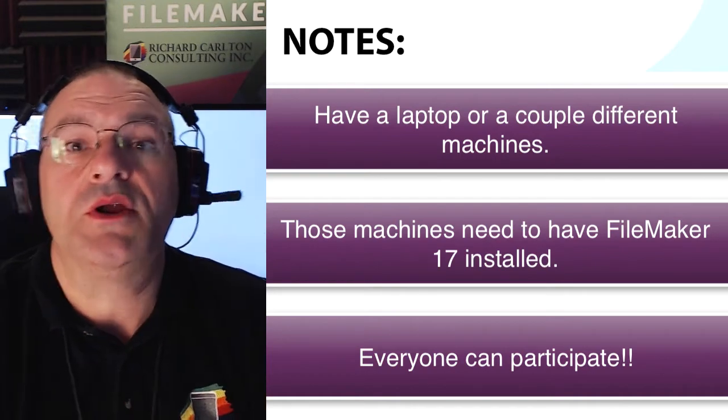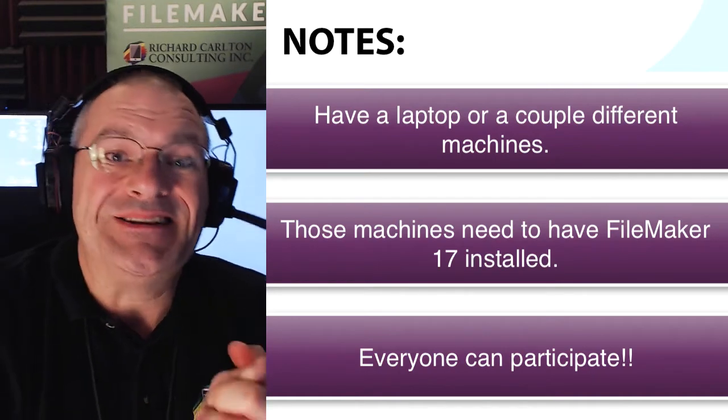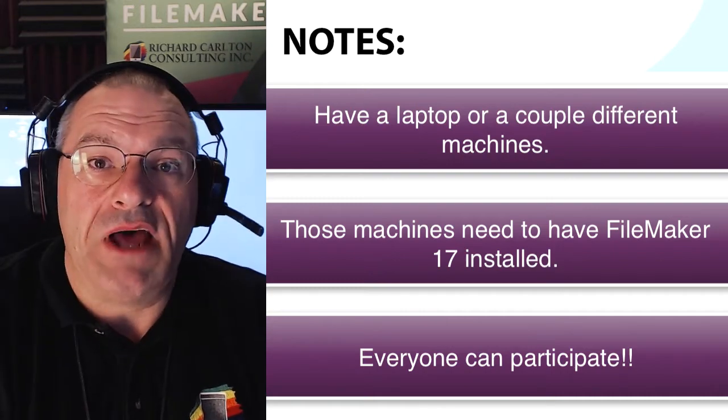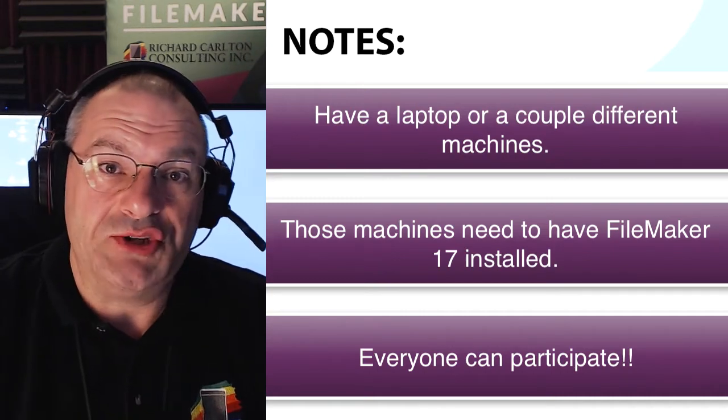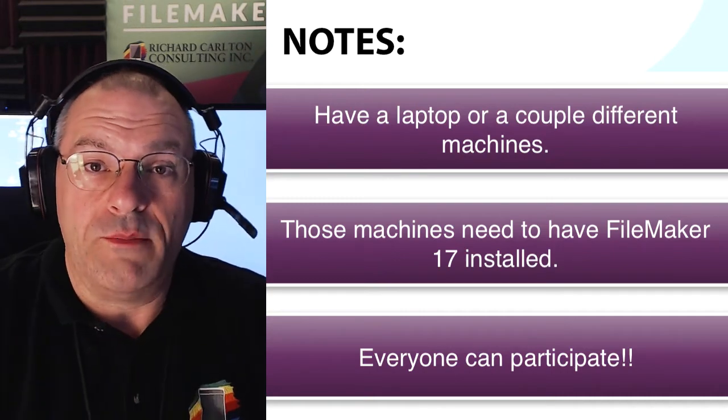Everyone in the webinar will be able to participate in the database and use it at the same time. We're hoping for 200 people to come. Along the way, we're going to talk about the things we did in the file to improve the performance — tips you can take to use in your own files so you can have hundreds of people use a single FileMaker file at one time. And even if you don't want hundreds of people, these tips and tricks are super useful even if you have 20 or 30 people.